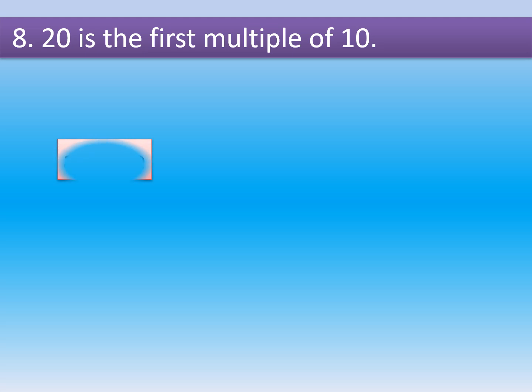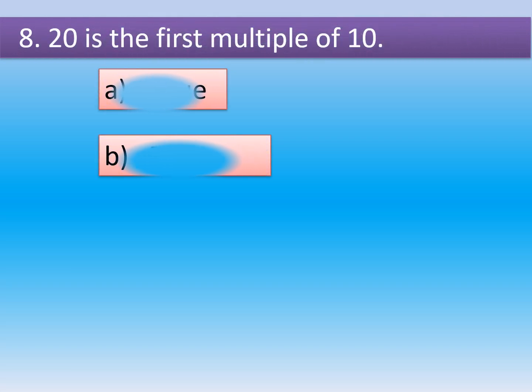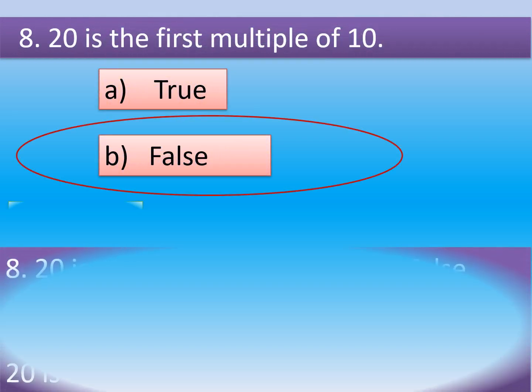Question number 8: 20 is the first multiple of 10. Option A, true. Option B, false. The correct option is Option B.